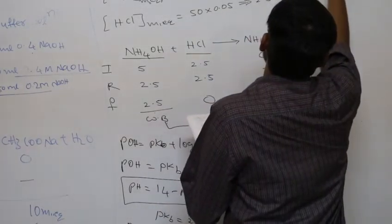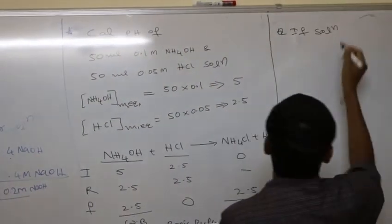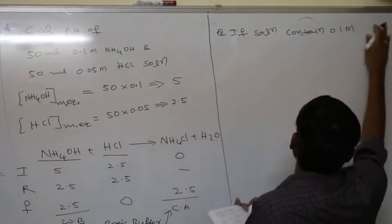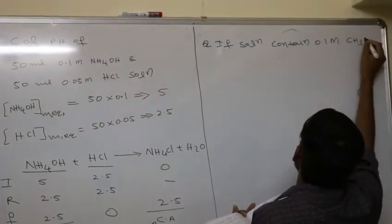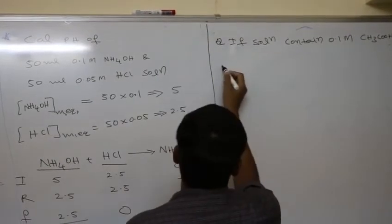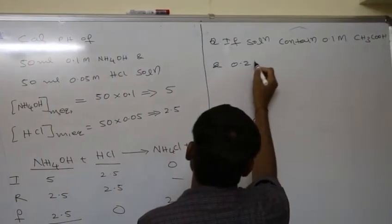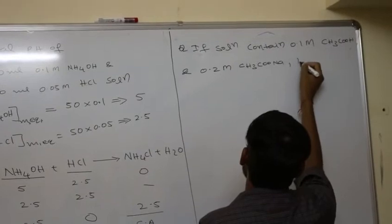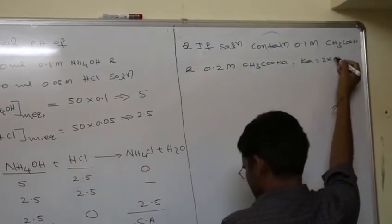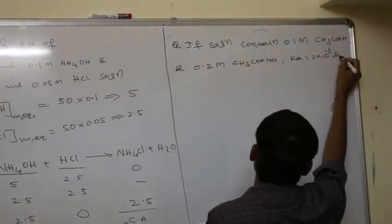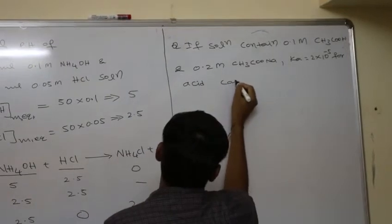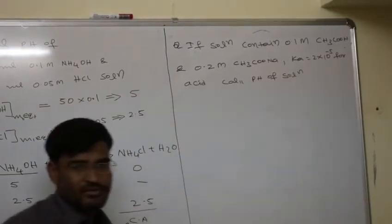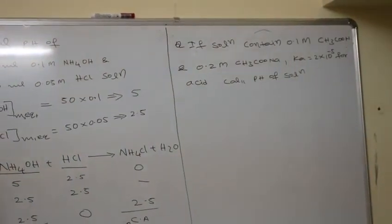Next question: if a solution contains 0.1 molar acetic acid and 0.2 molar sodium acetate, with Ka = 2 × 10⁻⁵ for the acid, calculate the pH of the solution.